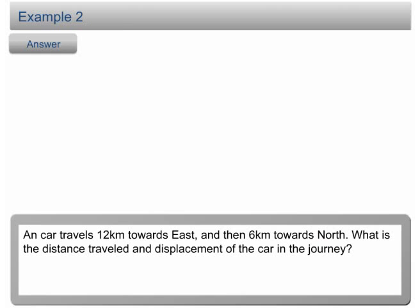Example 2. A car travels 12km towards east and then 6km towards north. What is the distance traveled and displacement of the car in the journey?